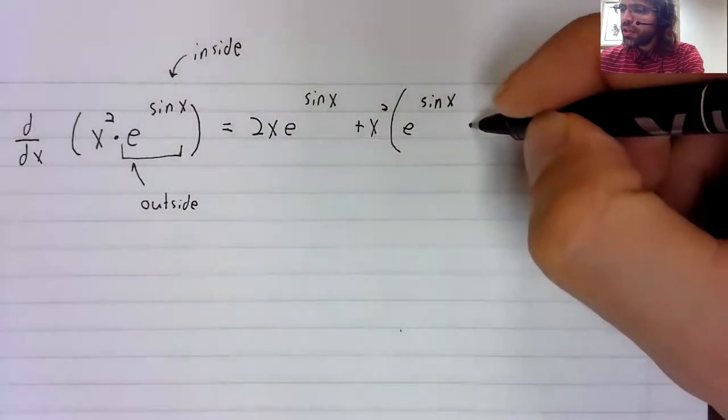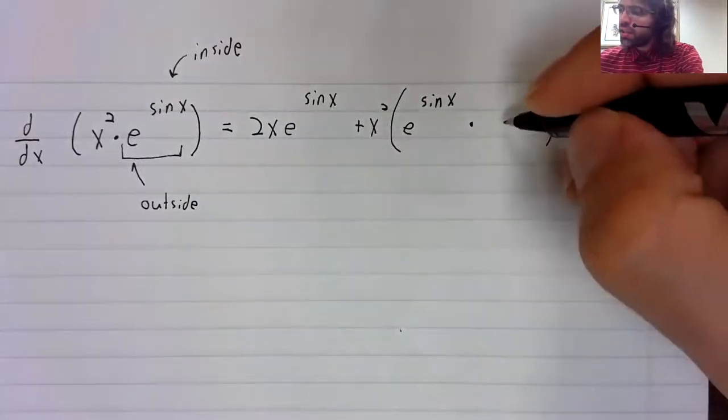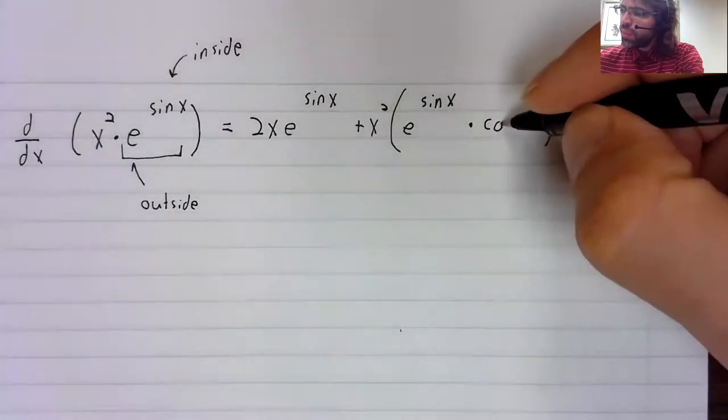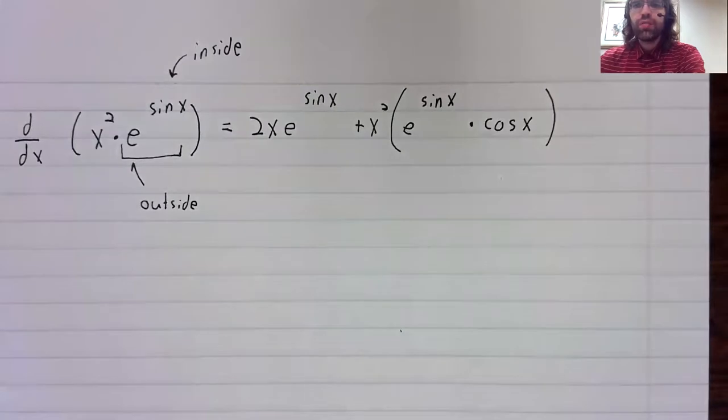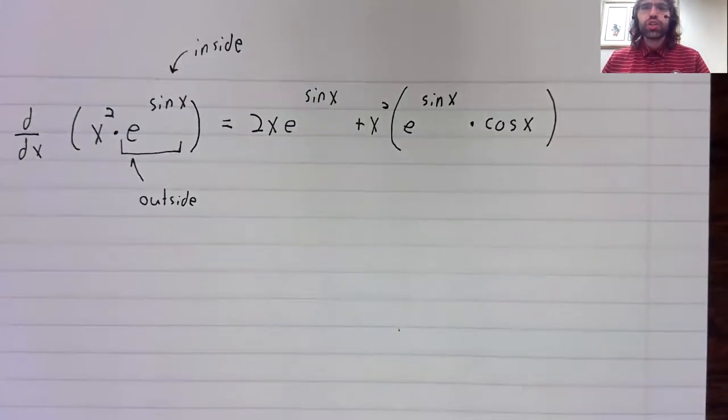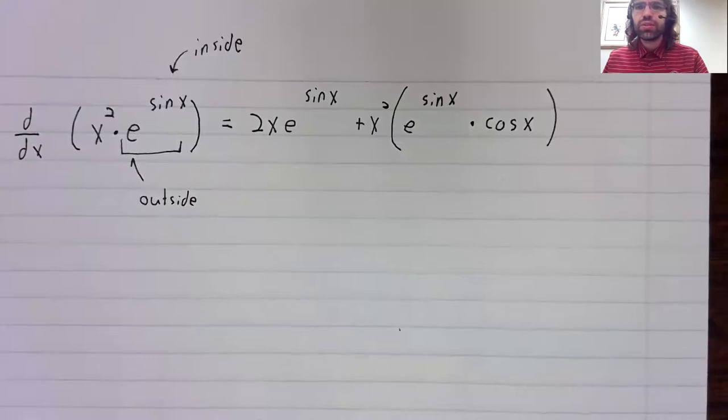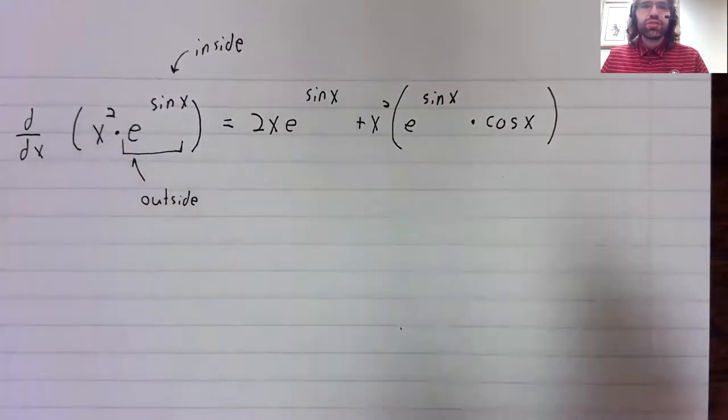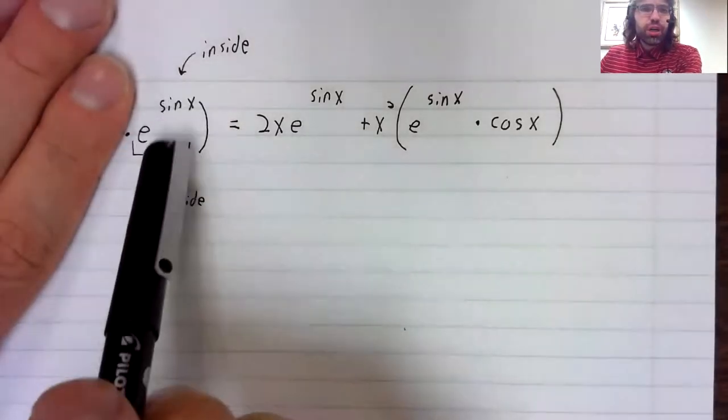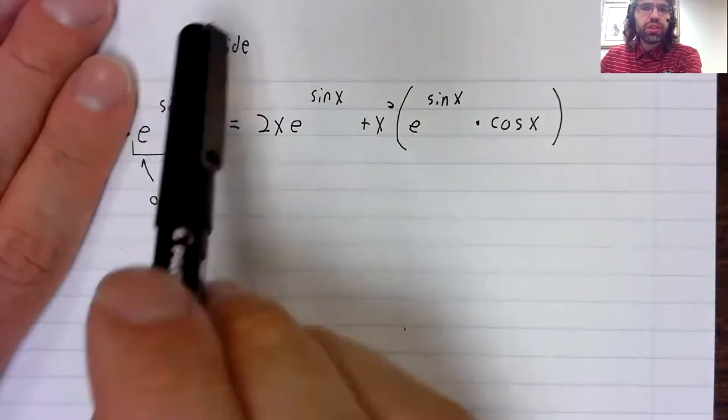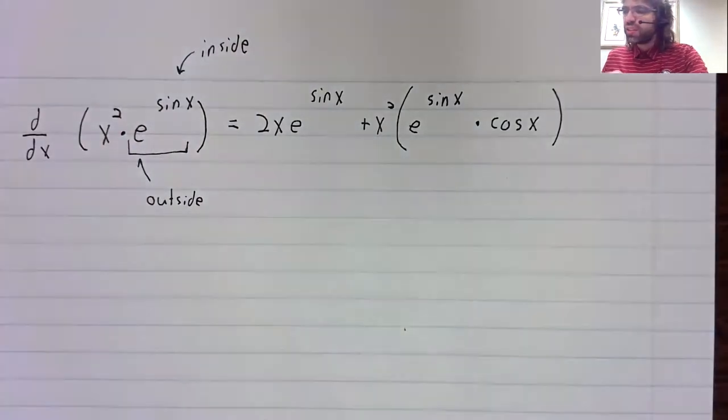And then we should multiply by the derivative of the inside function. So here is this derivative, a combination of the product rule and the chain rule. And this is probably the most important part of this example.